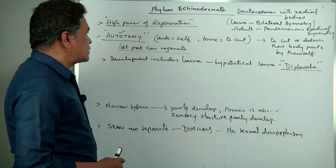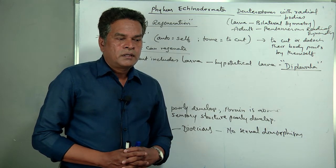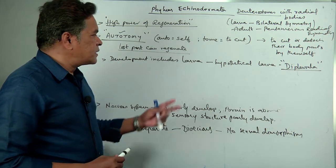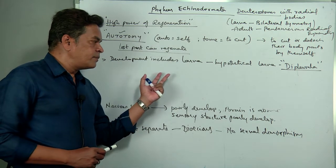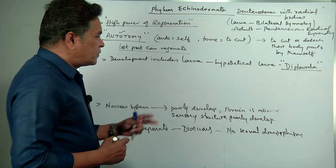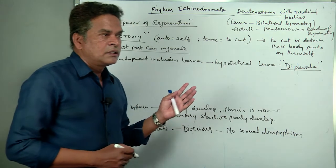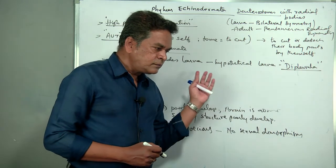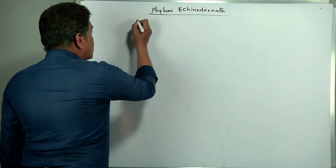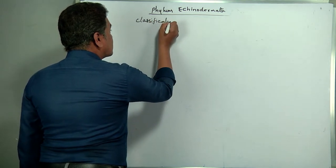Autotomy and high power of regeneration are very frequently asked MCQ concepts. We will go ahead with the classification, discussing examples under the classes: starfishes, feather stars, brittle stars — all these examples we will discuss now in the classification of Echinodermata.